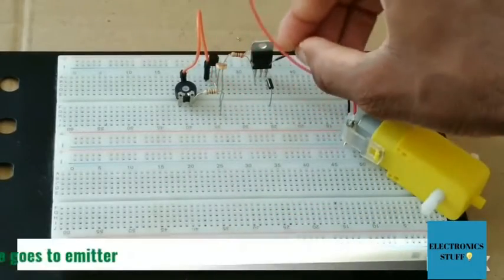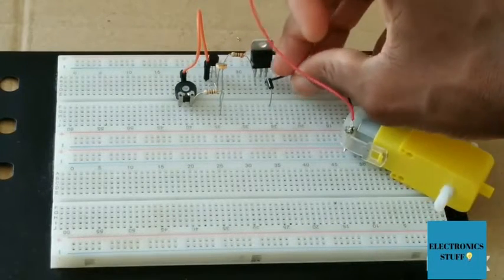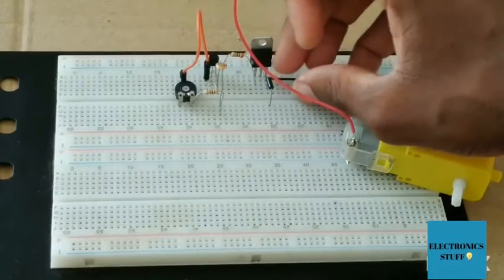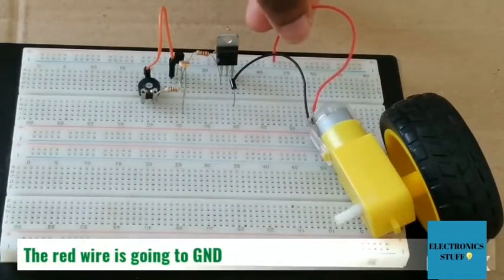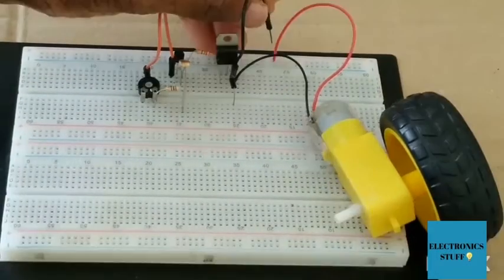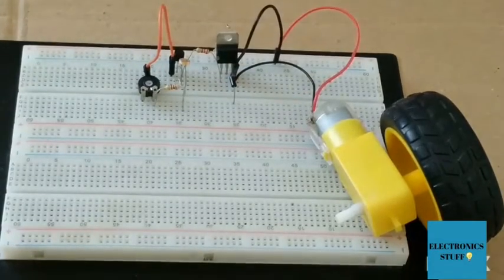The black wire of the DC motor goes to the middle of the TIP 120 NPN transistor. The black wire and the red is going to the ground of our power supply.